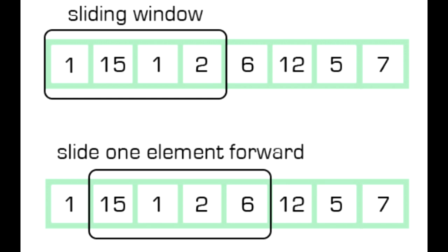So what is the sliding window algorithm? The sliding window algorithm is used to find problems involving contiguous subarrays or sublists. As you can see in this picture, we have a sliding window — basically a window that we're going to add values into or remove values from. So we have 1, 15, 1, 2. If I move this window forward, it shifts to the right and we have 15, 1, 2, 6. What we did is remove the 1 and add a 6. We're just moving this window either forward or backward down our array.